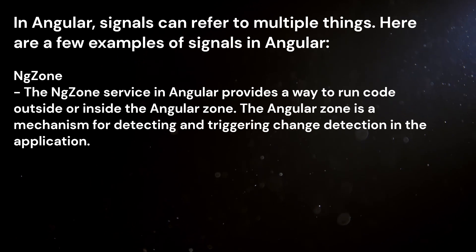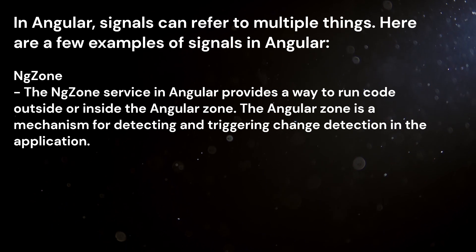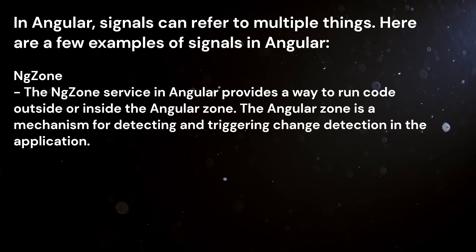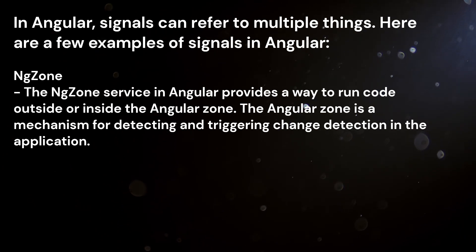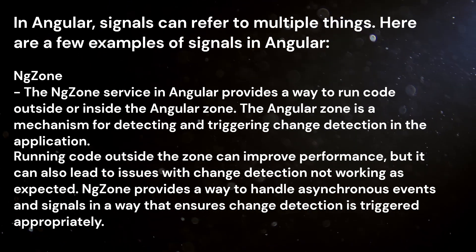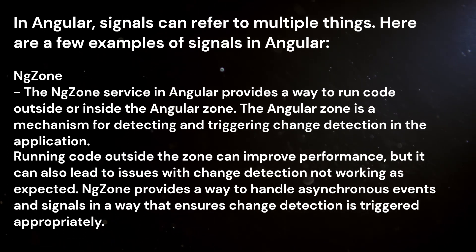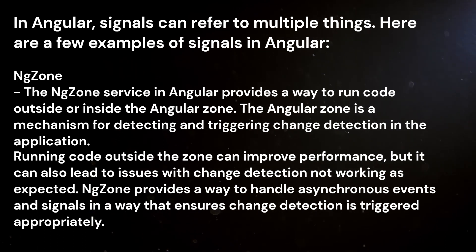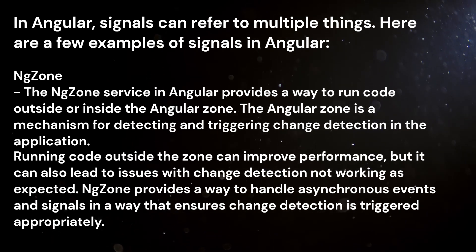NGZone — the NGZone service in Angular provides a way to run code outside or inside the Angular zone. The Angular zone is a mechanism for detecting and triggering change detection in the application. Running code outside the zone can improve performance, but it can also lead to issues with change detection not working as expected. NGZone provides a way to handle asynchronous events and signals in a way that ensures change detection is triggered appropriately.